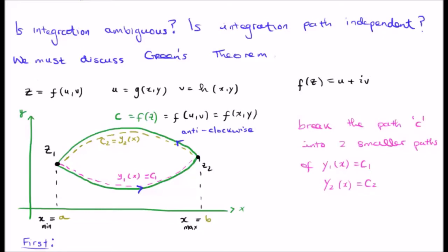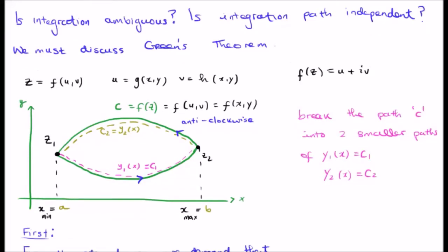Let's consider the exact same closed curve as we did in video number 2, where we went from x_min equal to a, x_max equal to b. We split the curve up into two separate components, namely c1 which is y1 of x, and c2 which is y2 of x.